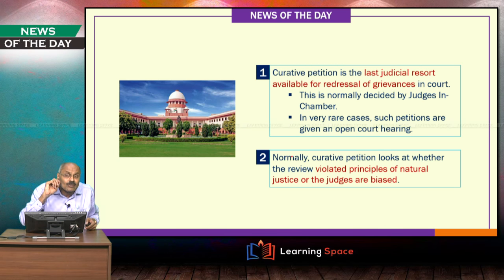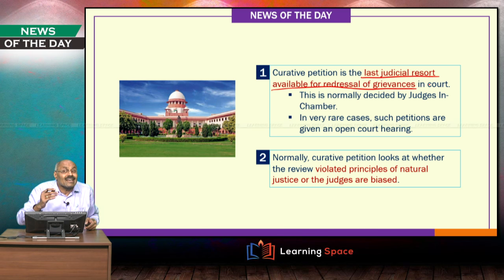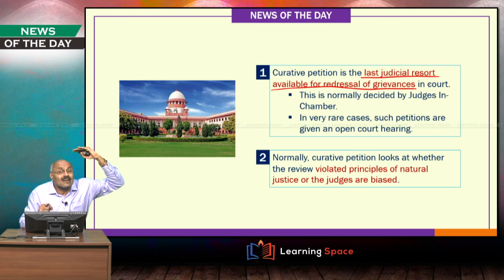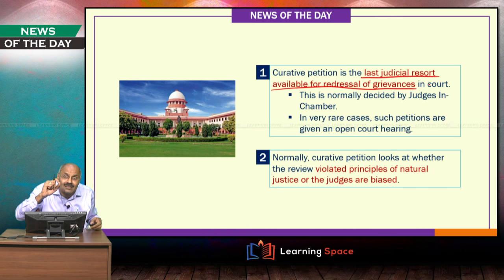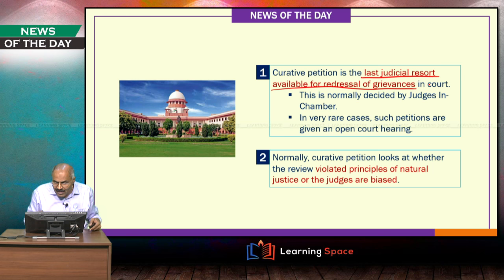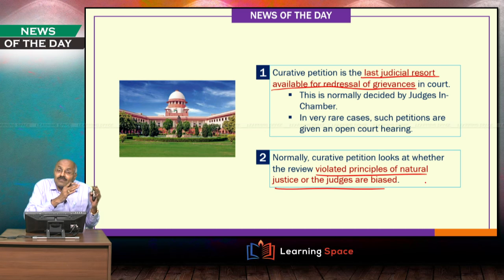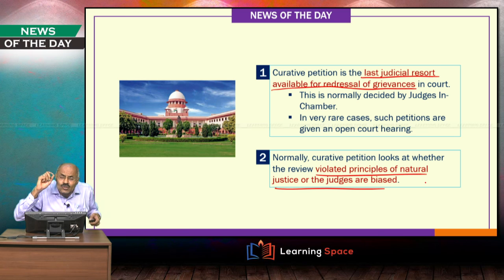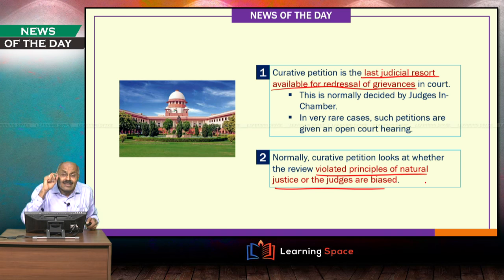Curative petition is the last judicial resort available for redressal of grievances. It normally examines whether any principles of natural justice are violated or whether the judges are biased. To look into these two aspects, curative petition is admitted. So: first original judgment, then review, and the third and last resort is curative petition.